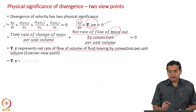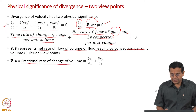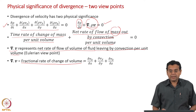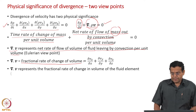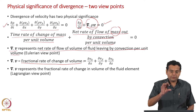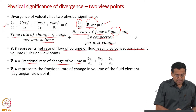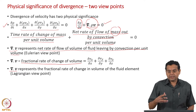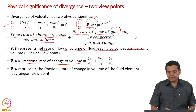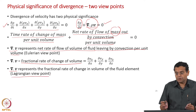There is an alternate viewpoint for ∇·v: it is the fractional rate of change of volume. So we can interpret ∇·v as the fractional rate of change of volume. If you have a fluid element and you follow that fluid element, the rate of change of its volume — per unit volume — is represented by ∇·v. This is another physical significance of ∇·v.